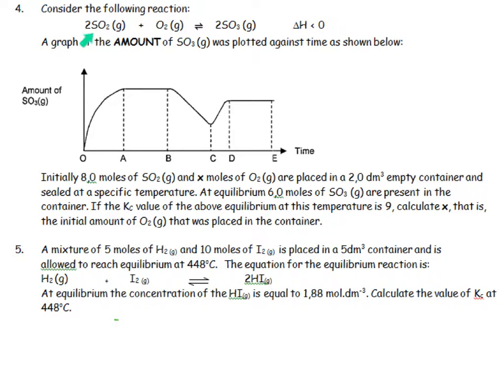Consider the following reaction: 2SO2(g) + O2(g) ⇌ 2SO3(g). The graph shows the amount of SO3 plotted against time. To start with, they're going to put 8 moles of SO2, and x moles of oxygen are placed in a 2 dm³ empty container. The ratio is 2:1:2.